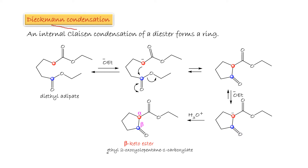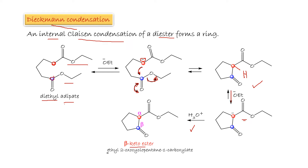Dieckmann Condensation is an internal Claisen condensation of a diester. We have two ester groups in the same molecule, like diethyl adipate. One carbon is the source of the enolate and the other ester carbonyl is the acceptor. The first step is an acid-base reaction forming the enolate, which attacks the carbonyl of the other ester — addition followed by elimination — to give the cyclic product. The driving force is the formation of the salt via deprotonation of the alpha hydrogen. Then we acidify to give the beta-keto ester: ethyl 2-oxocyclopentane carboxylate.